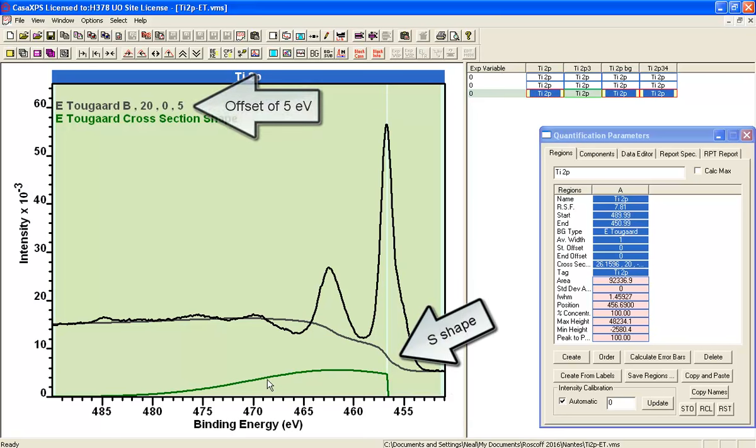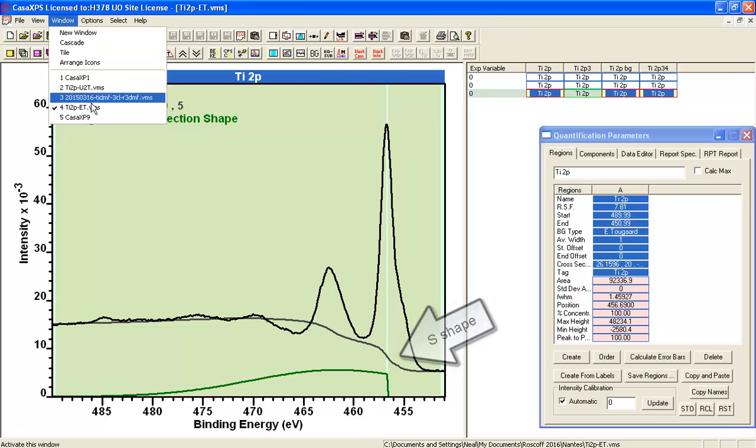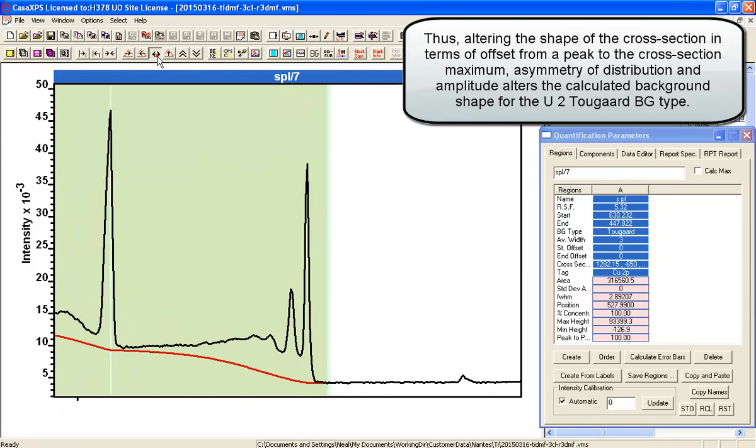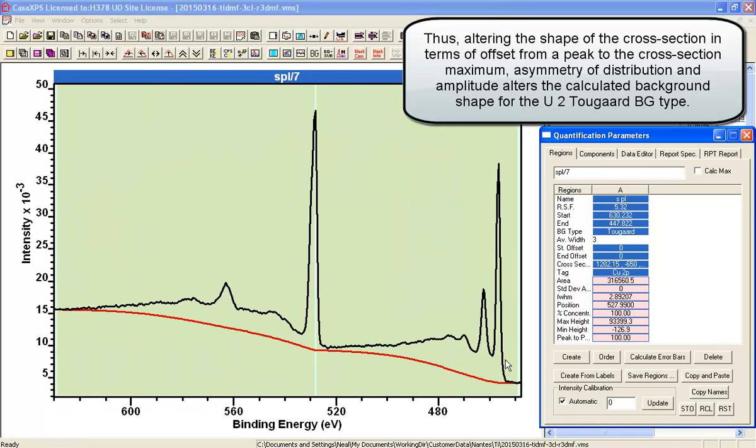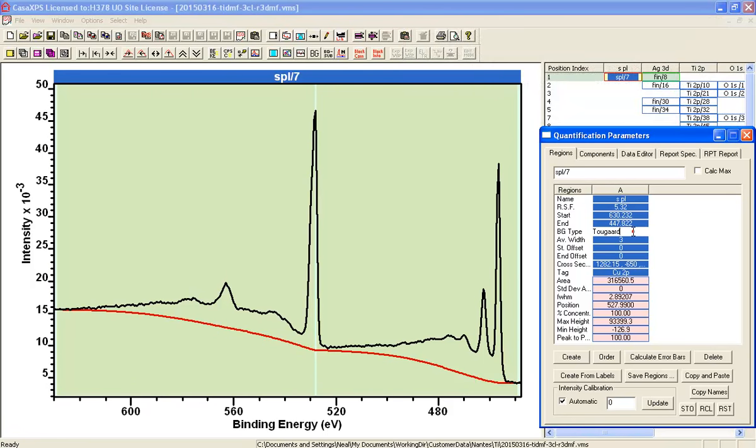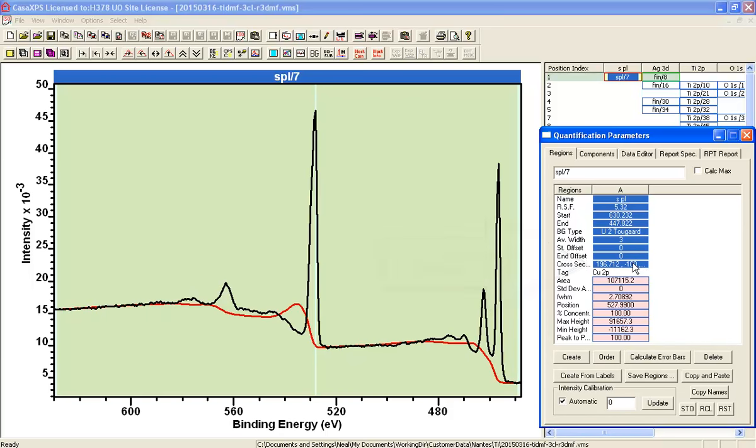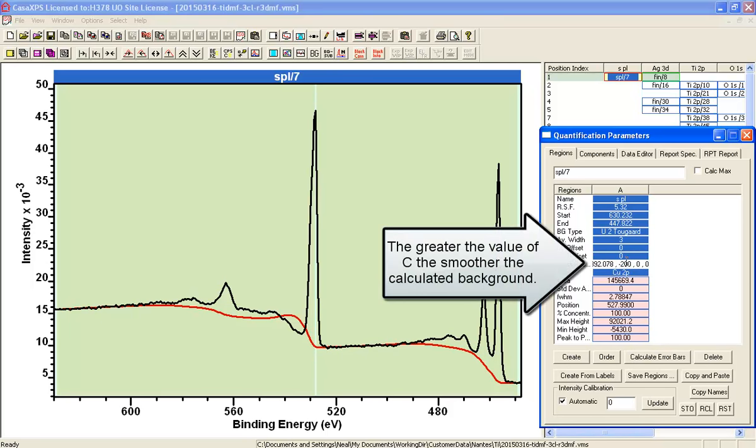So, the type of background that can be calculated using the U2 2GAR background can be understood in terms of these adjustments to the cross section. So, if I introduce the U2 2GAR, it's come in with 650 for the C parameter. I can set that to 100, and you can see how the shape is exaggerated by that. If I increase the value, it becomes more smooth as the value increases, so that you lose the structure that was in the Shirley background.